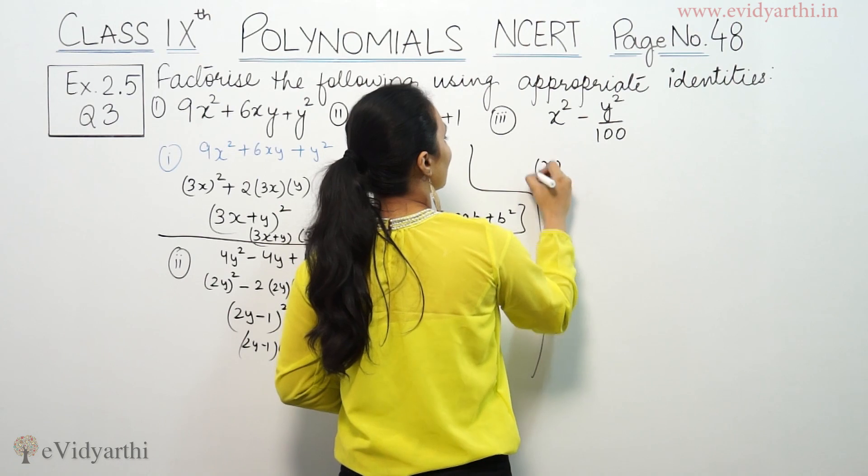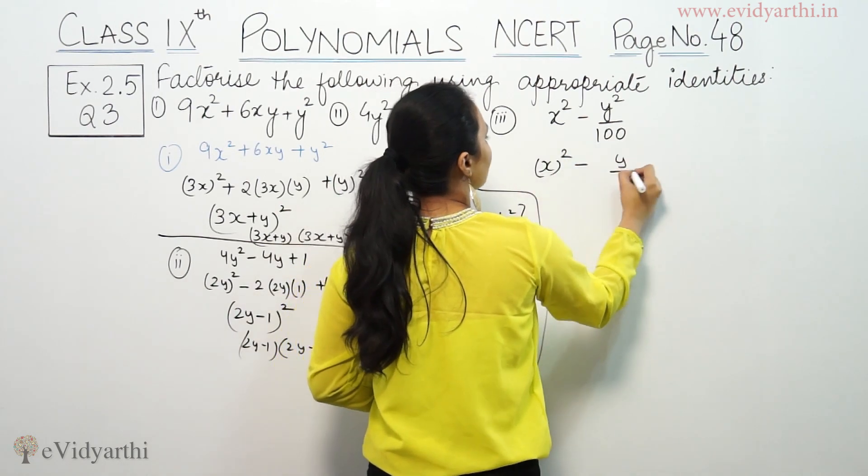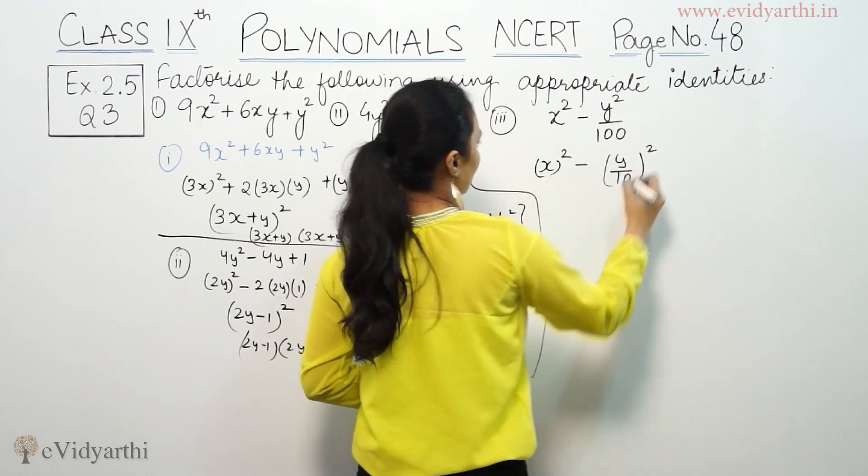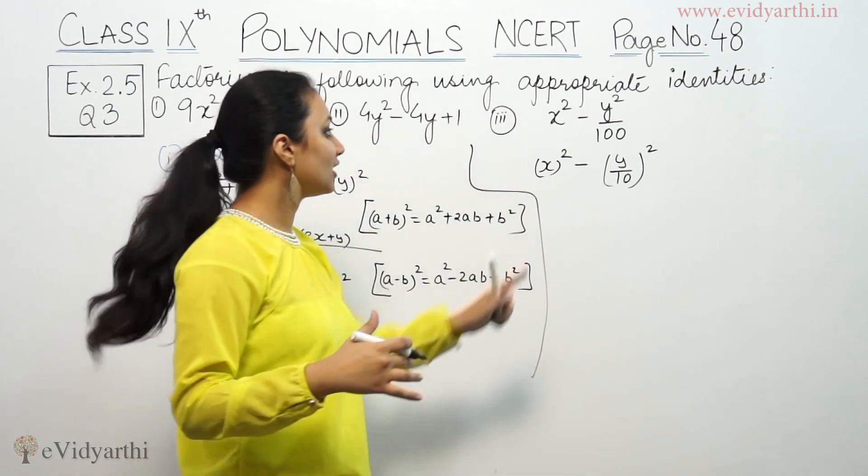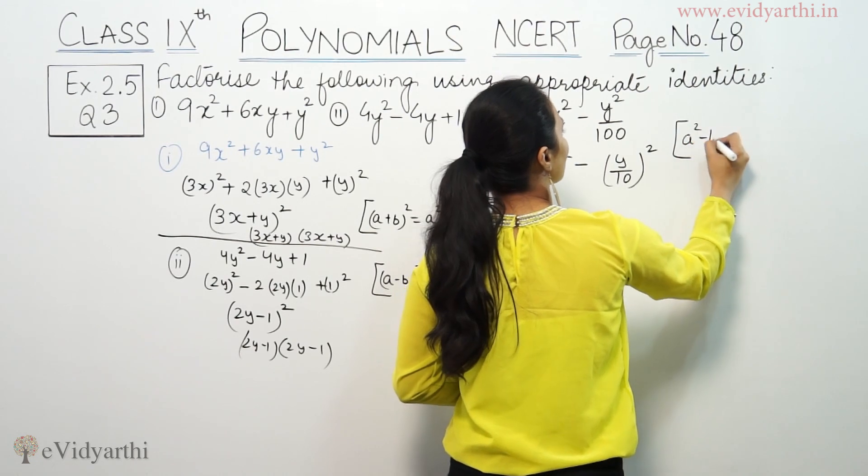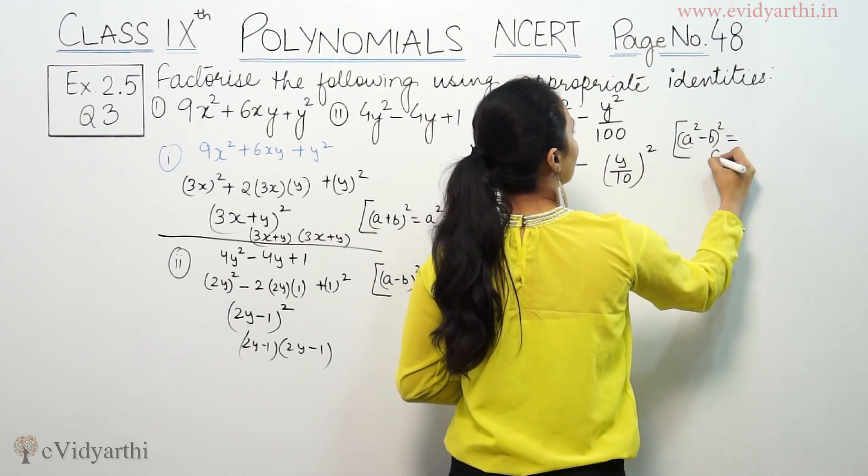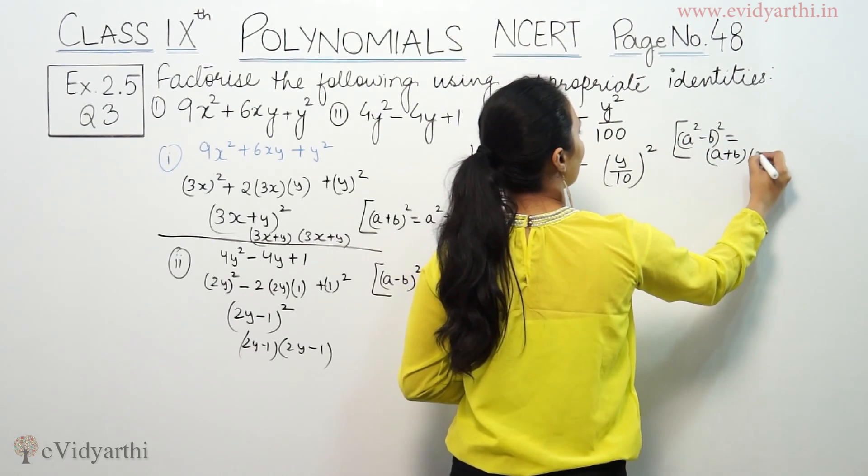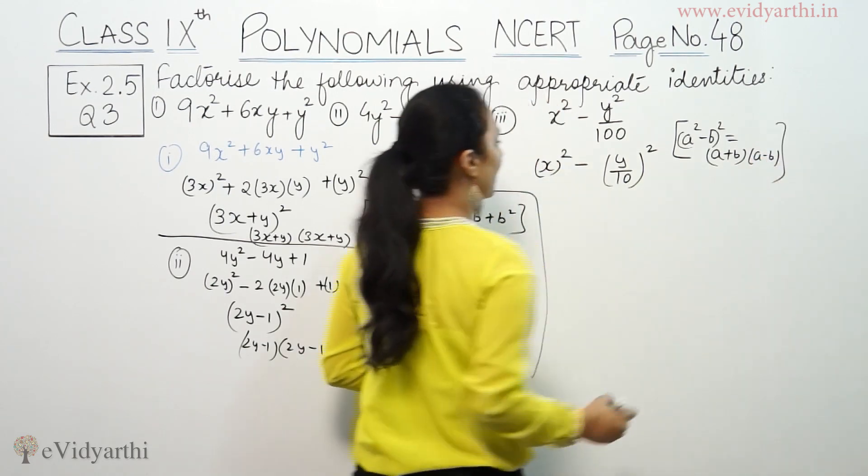x² minus y². I take x² minus y²/100. This is y²/100. So, here this identity is a² minus b², which is a plus b times a minus b.